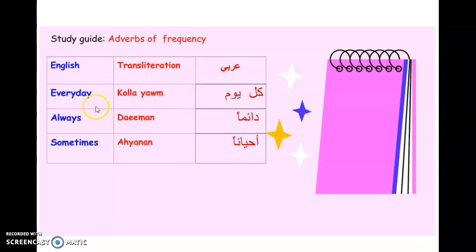Always is da-iman. For example: umaris as-sibaha da-iman — I always practice swimming. And sometimes is ah-yanan. Al-abu kura-ta al-salla ah-yanan — I play basketball sometimes. So the three adverbs are: kulla yaum, da-iman, ah-yanan.